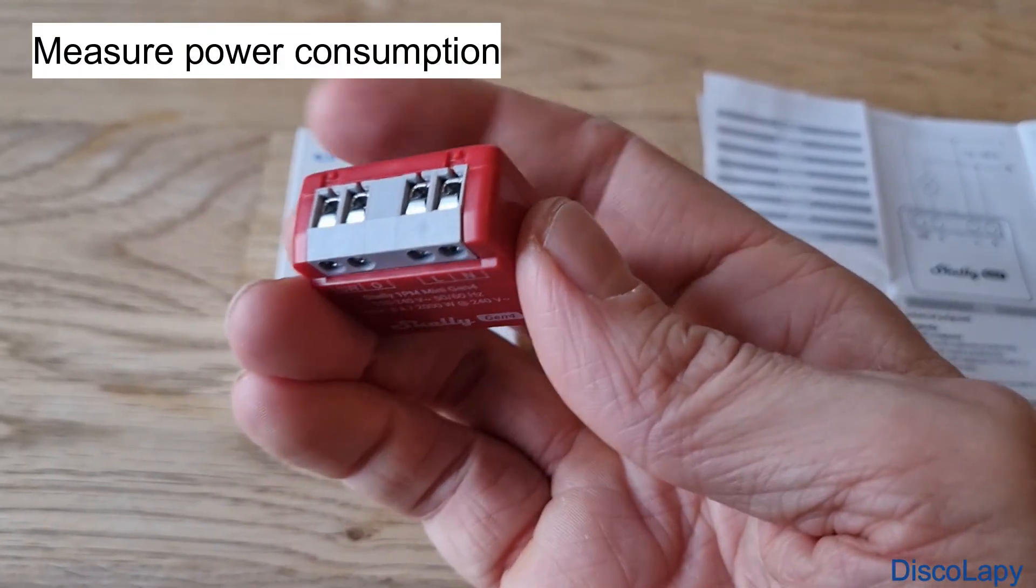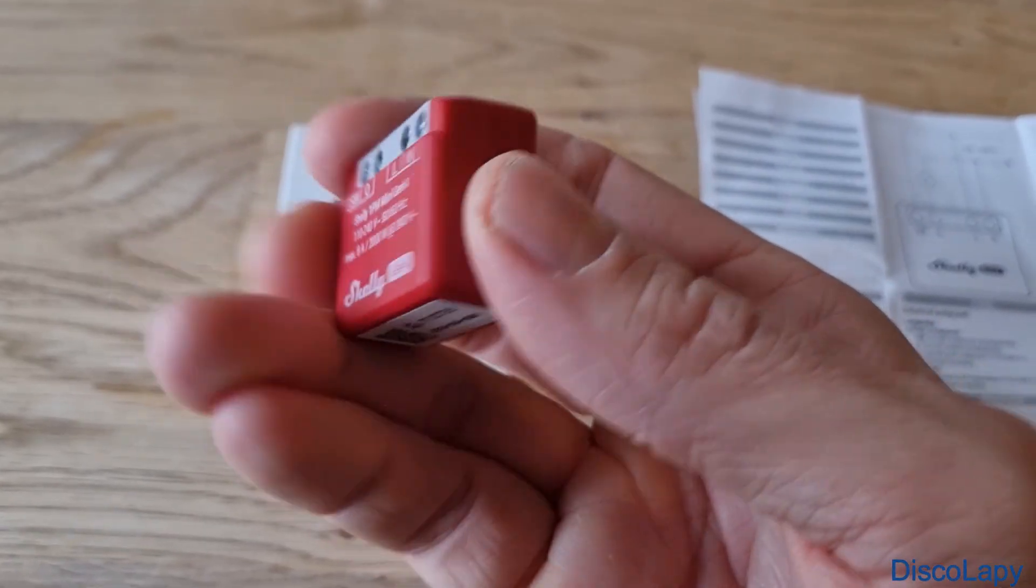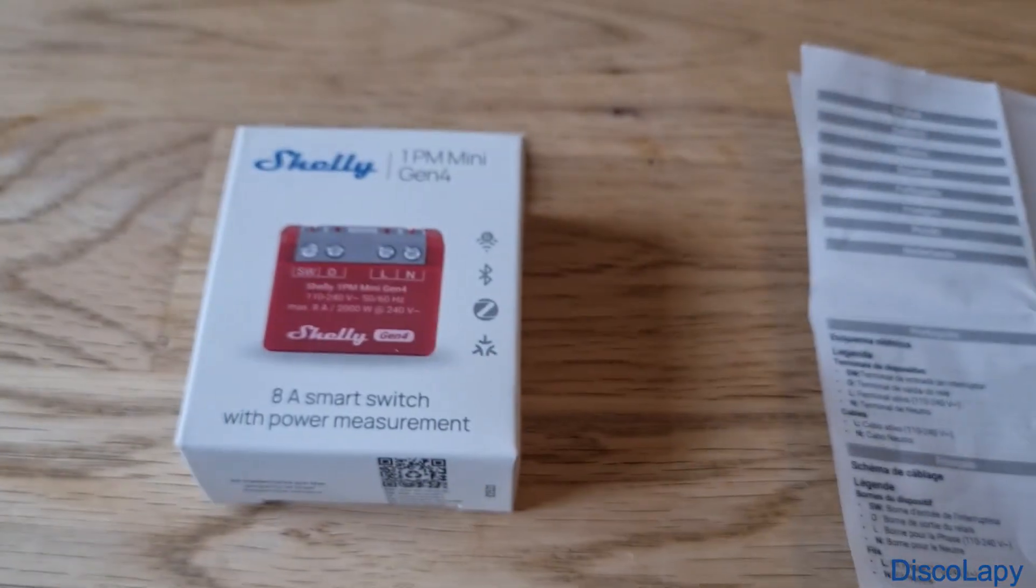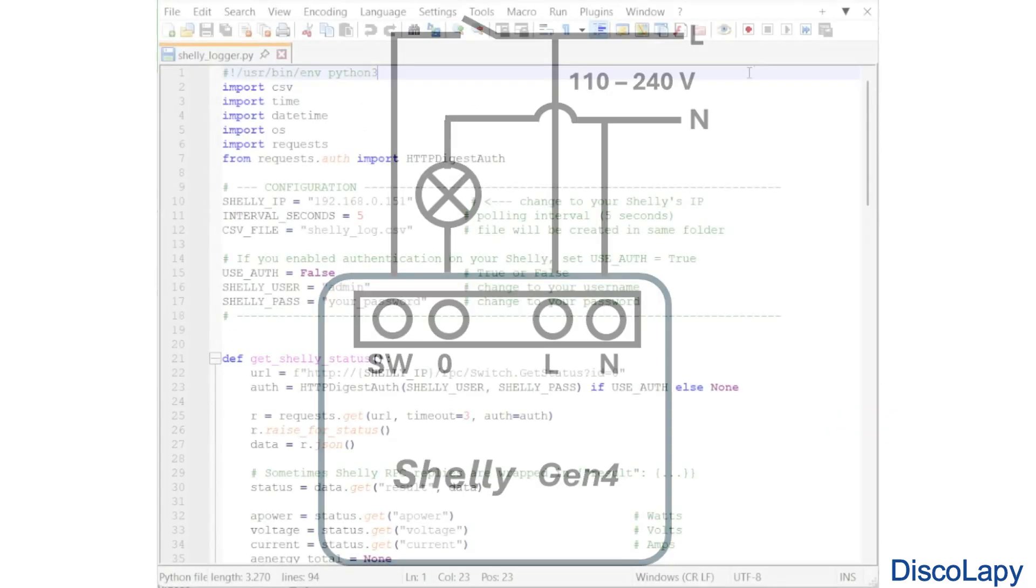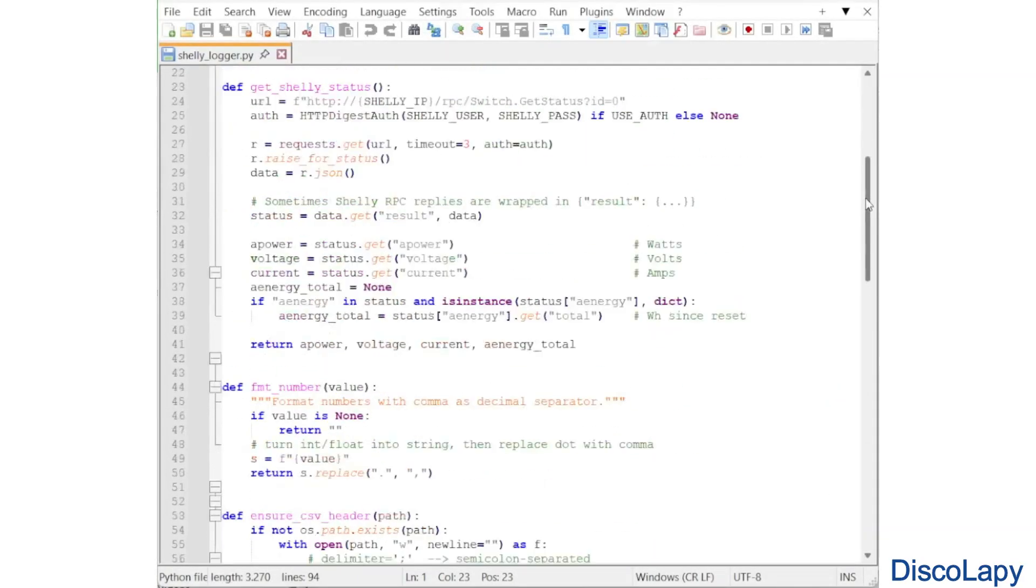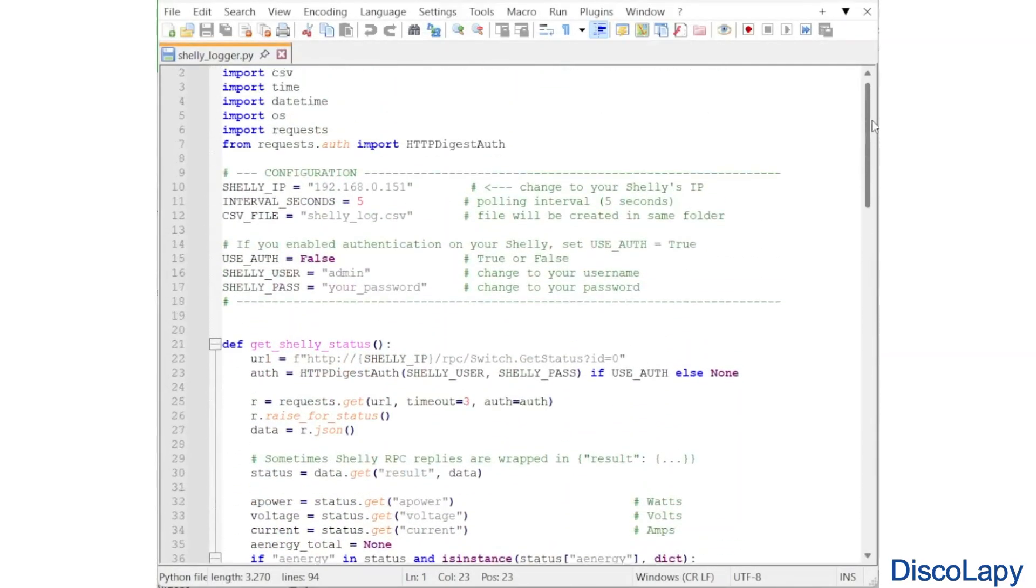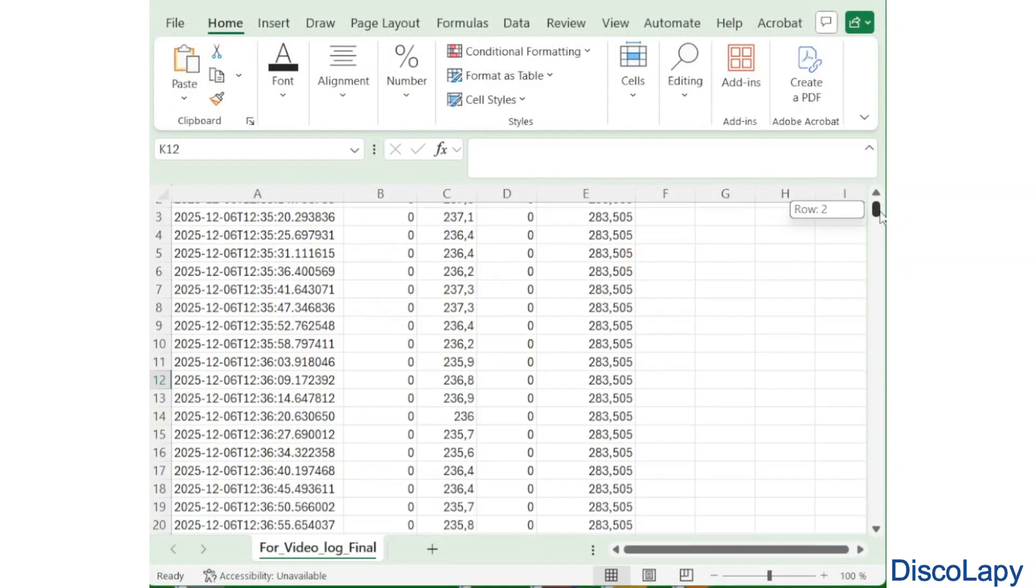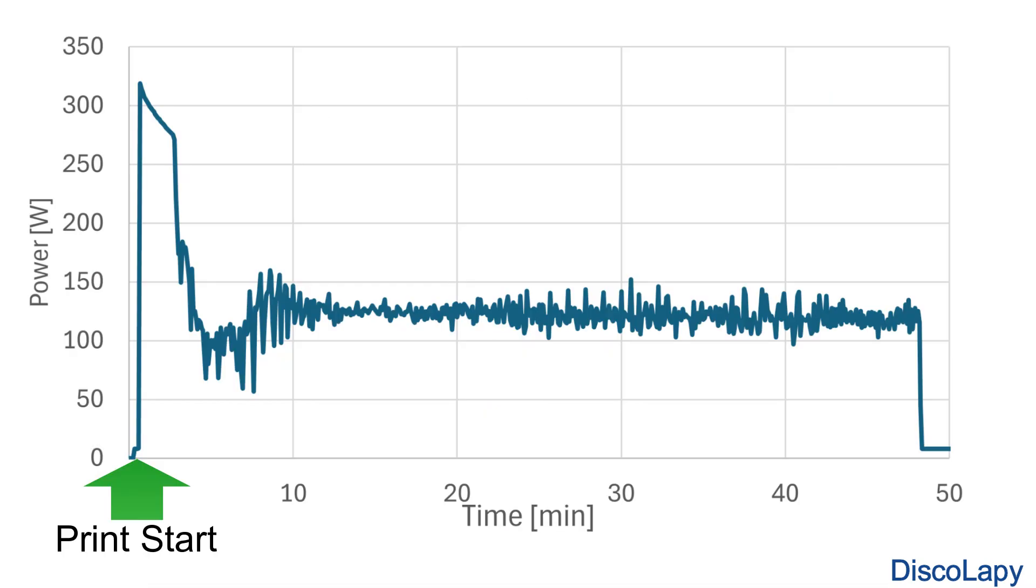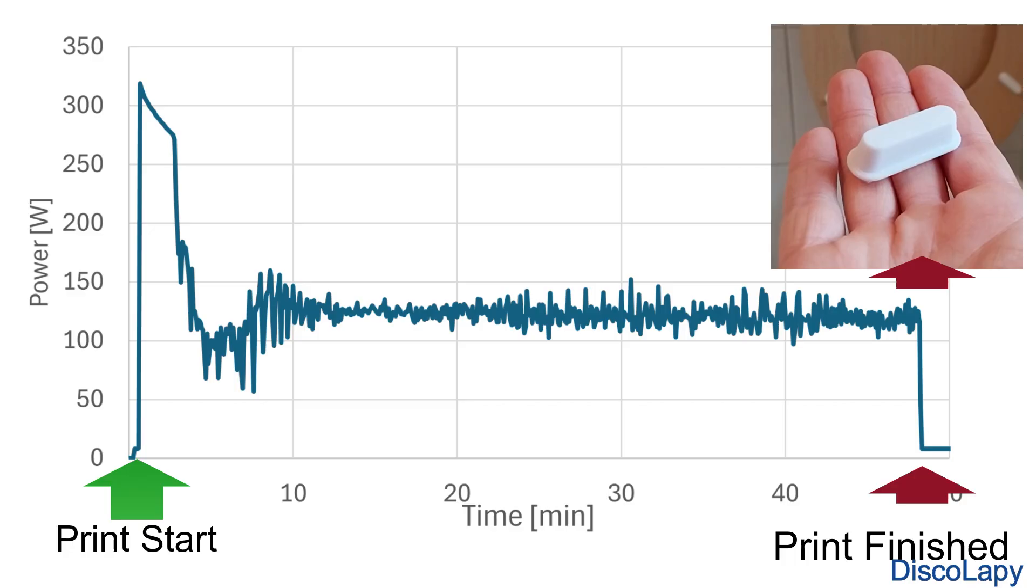To measure the power over time I used a Shelly 1PM mini generation 4 device to record voltage and current. A Python script logged the power every 5 seconds to a CSV file, which I then used to generate this power over time graph for the complete print job.